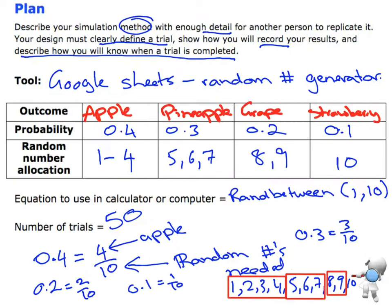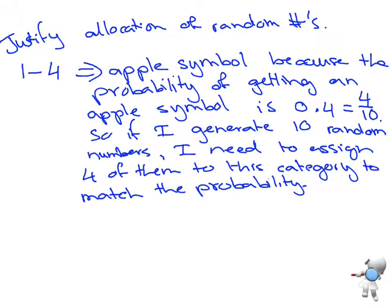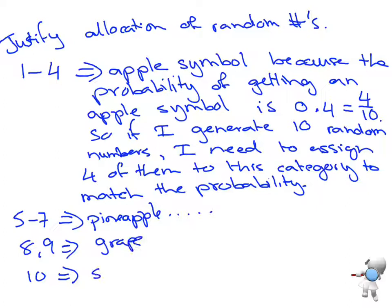That justifies the first symbol — apple. I then need to do the same kind of justification for pineapple, grape, and strawberry. Numbers 5 to 7 were allocated to pineapple, numbers 8 and 9 to grape, and number 10 to strawberry, each with a similar explanation for why those allocations match the probabilities.